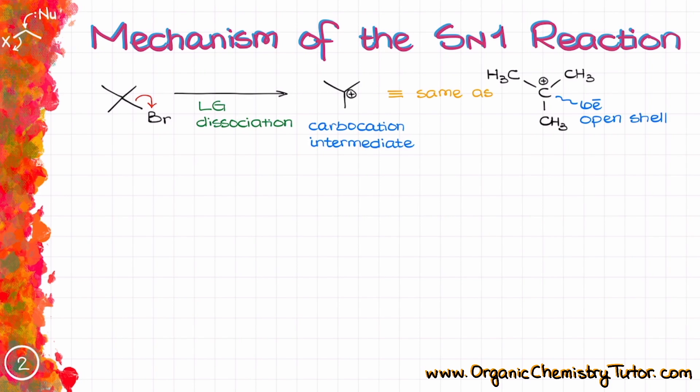So why would this process happen and why wouldn't the bromine just attack back, reforming our starting material, bringing essentially this reaction to exactly where we started? Well, this is where the solvent plays an integral role.